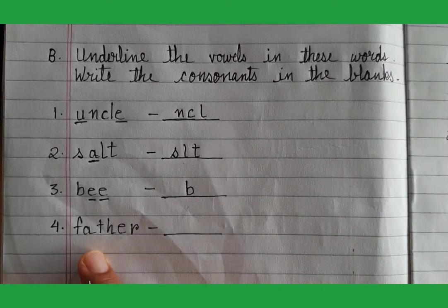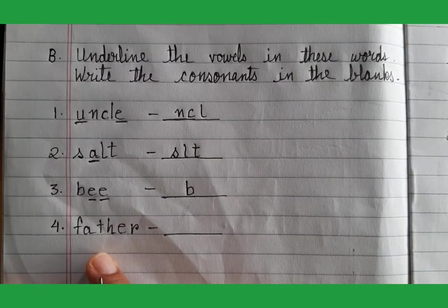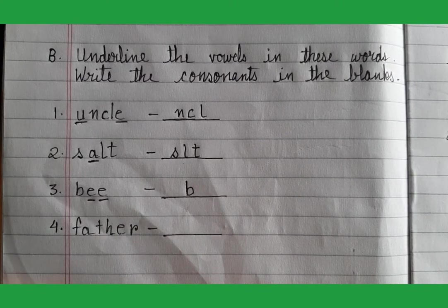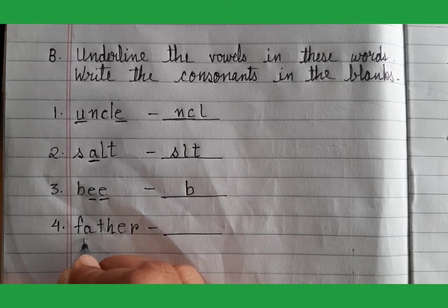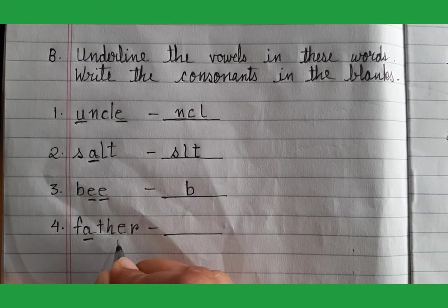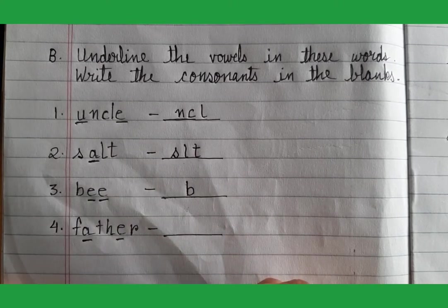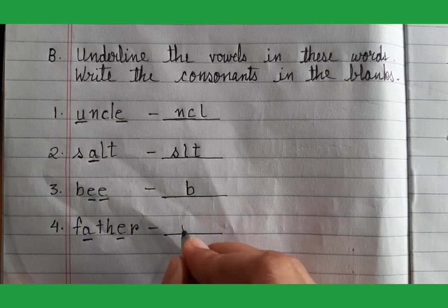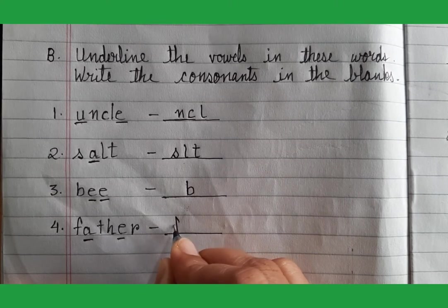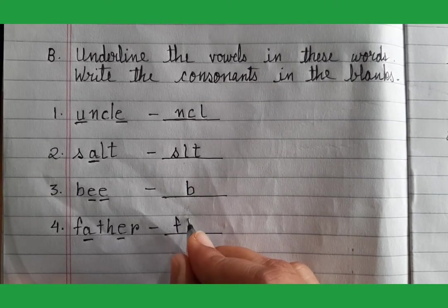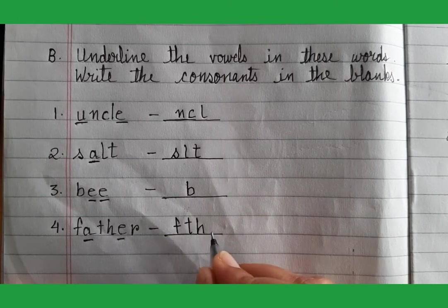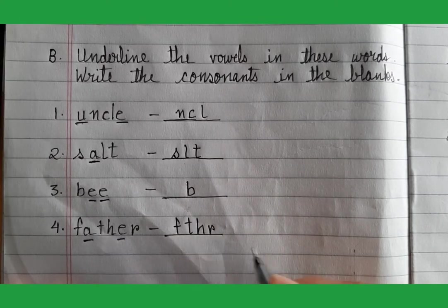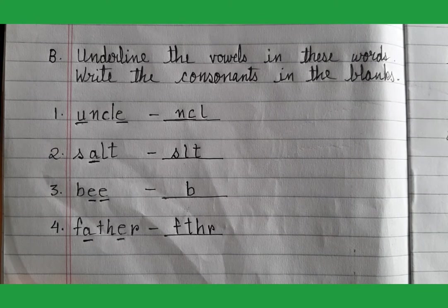Now next word is 'father.' In this word, which letters are vowels? A and E. And the letters F, T, H, and R are consonants.